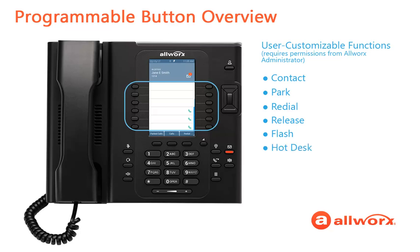Hotdesk logs into shared phones to receive or place calls using your assigned caller ID. Bluetooth hands-free connects a Bluetooth device to the Verge 9312 phone only. This advanced feature is covered in more detail in a separate training video.